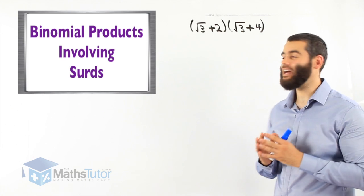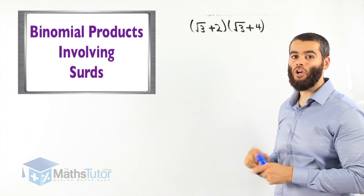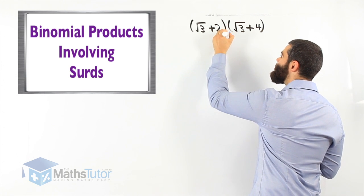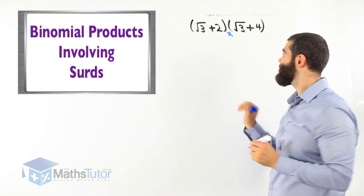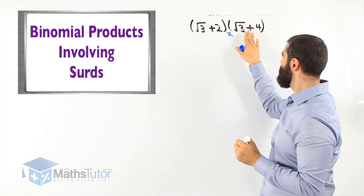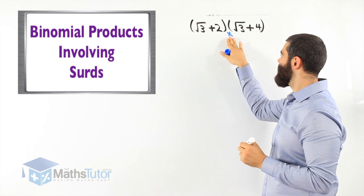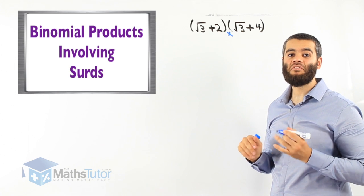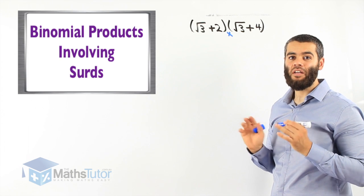Binomial products has two terms multiplied by two terms. In between the two brackets, there is a multiplication sign. So always remember, whenever you see binomials and binomials, we know they are multiplied together — there is an invisible multiplication. We follow the same process we did with algebraic binomial products.